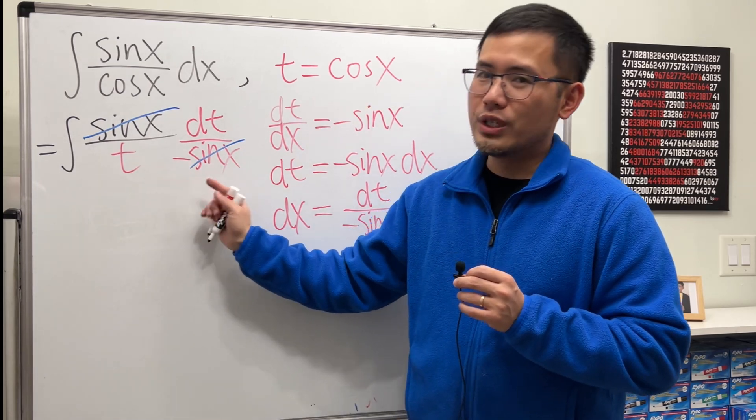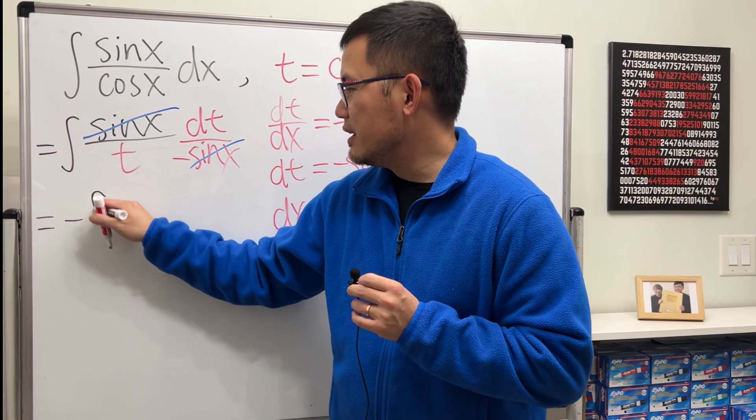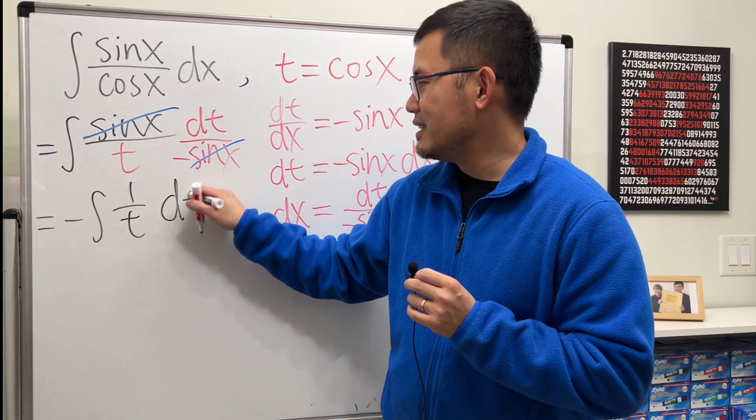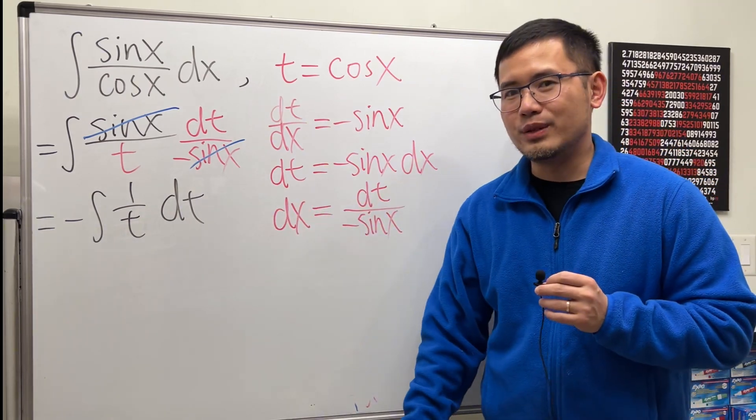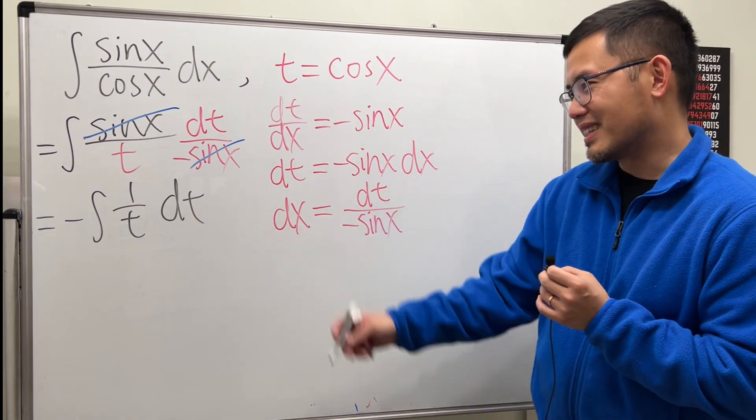And we have this negative. We can put it on the outside of the integral. So, this becomes negative integral 1 over t dt. And that's how exactly we got that earlier. Of course, I'm going to finish this right here. So, let's continue.